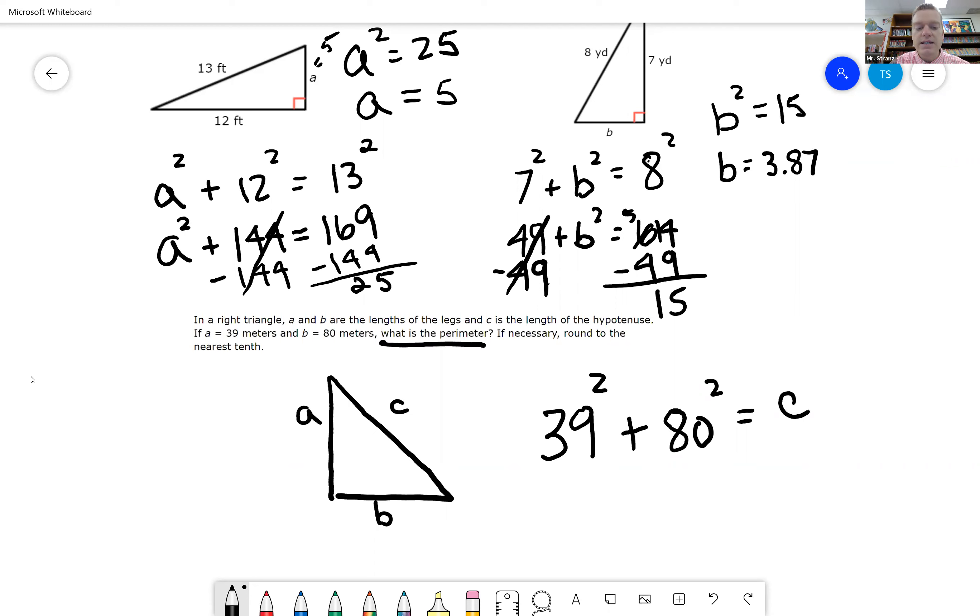So once we find C, we are going to need to add up all sides of the triangle. So you might need a calculator for this one. These are going to be pretty big numbers.